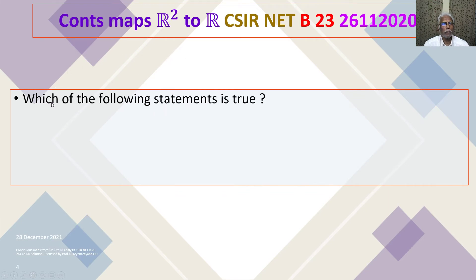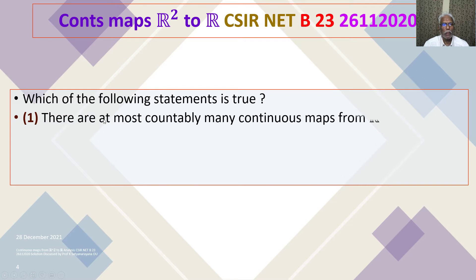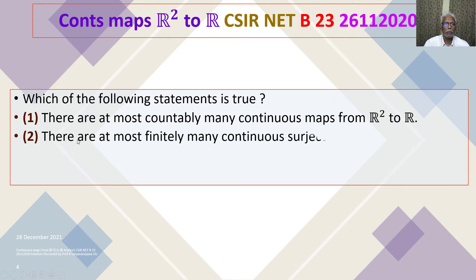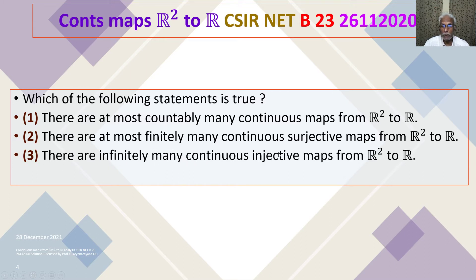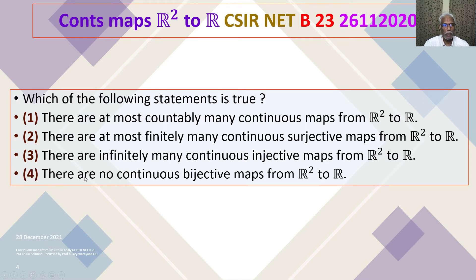The problem is: which of the following statements is true? Option 1: There are at most countably many continuous maps from R square to R. Option 2: There are at most finitely many continuous surjective maps from R square to R. Option 3: There are infinitely many continuous injective maps from R square to R. Option 4: There are no continuous bijective maps from R square to R.